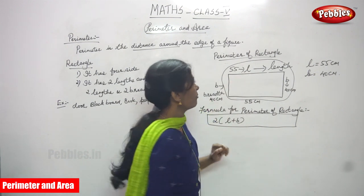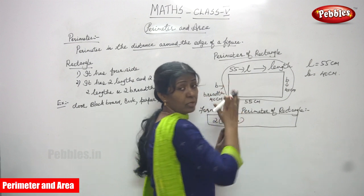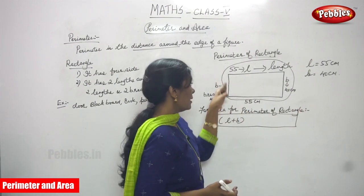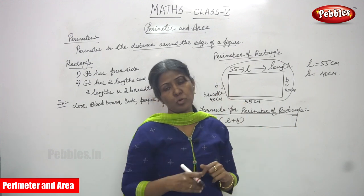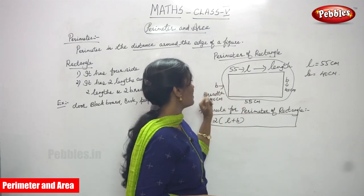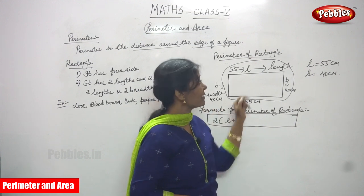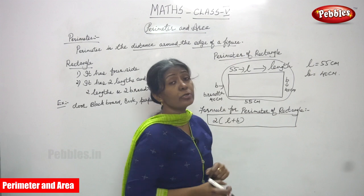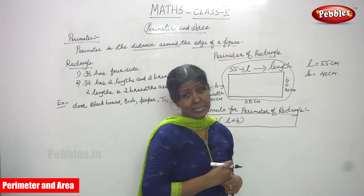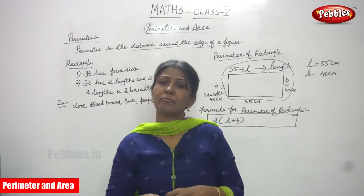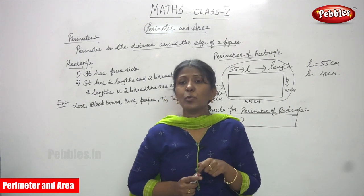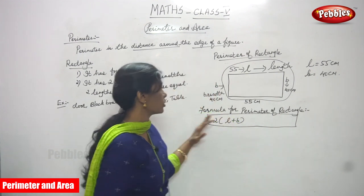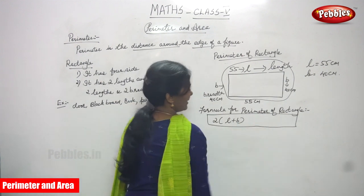Imagine this is a blackboard. The blackboard length is 55 centimeters and the breadth is 40 centimeters. The longer side is always called the length, and the shorter side compared to length is the breadth. B means breadth — 40 centimeters; L means length — 55 centimeters. Now the formula for the perimeter of a rectangle is 2 into (L plus B).